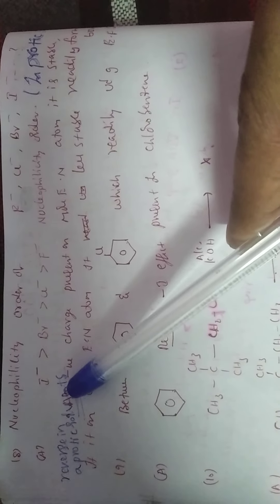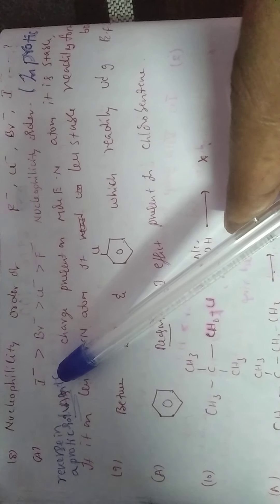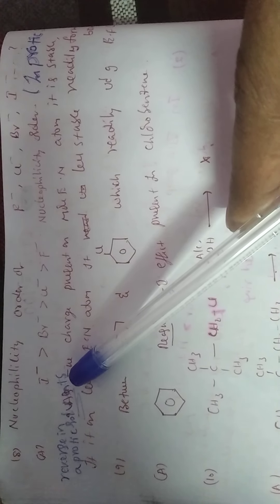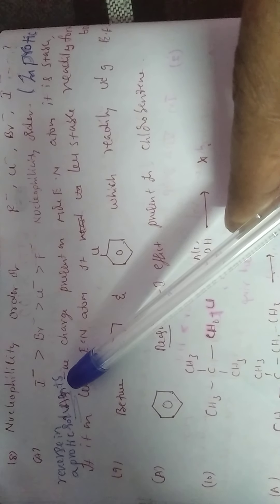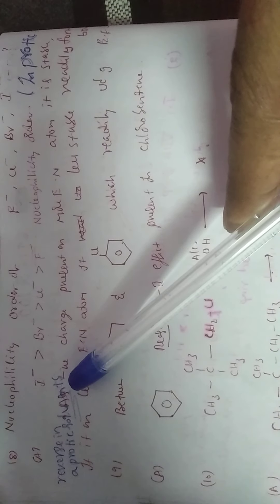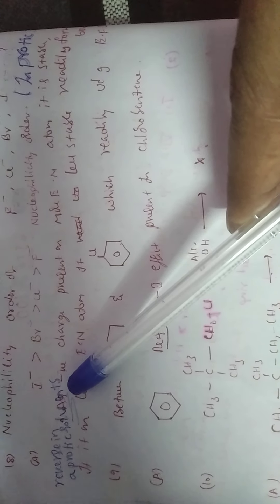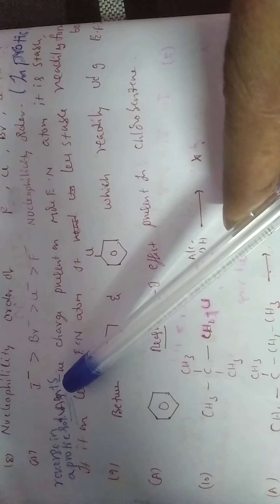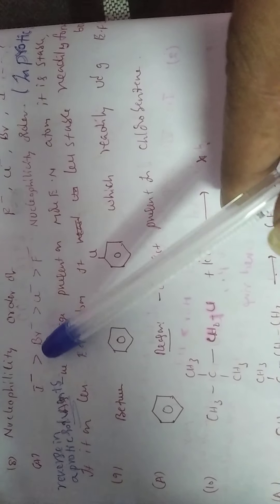Reverse in aprotic solvents. Aprotic solvents means not contain H plus ion like benzene, carbon tetrachloride, carbon disulfide. In these solvents, order is reverse. That means fluoride greater than chloride greater than Br minus greater than I minus.